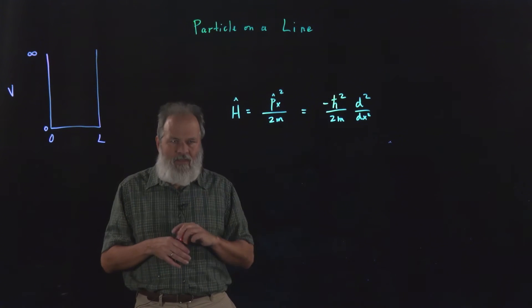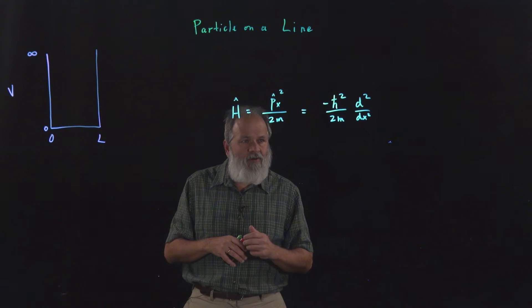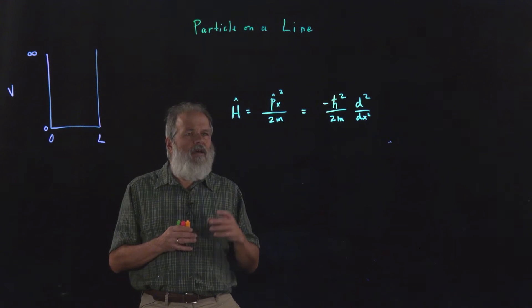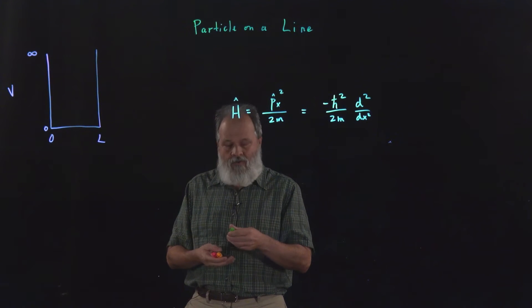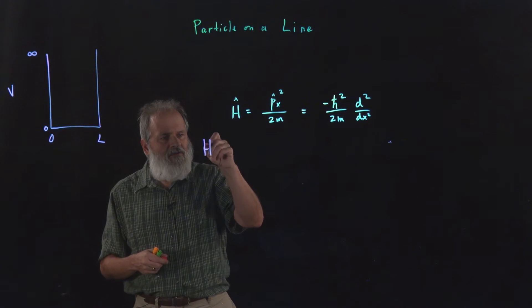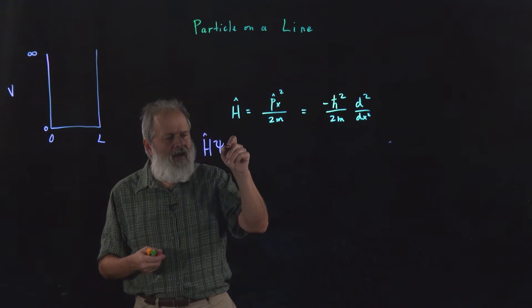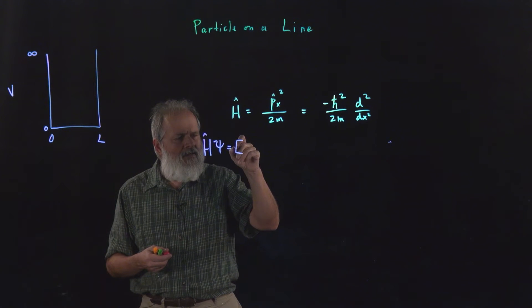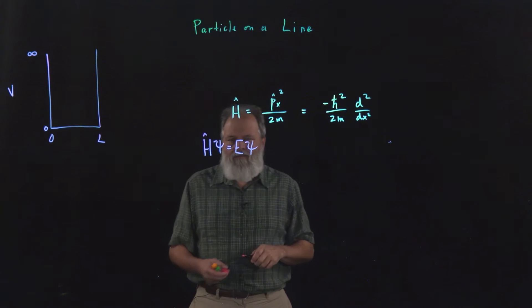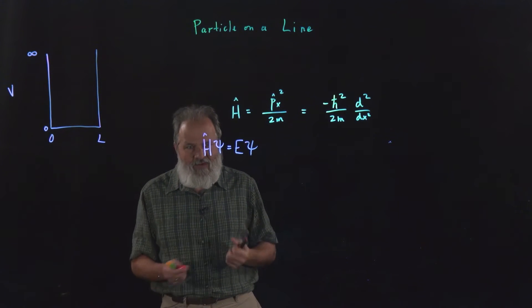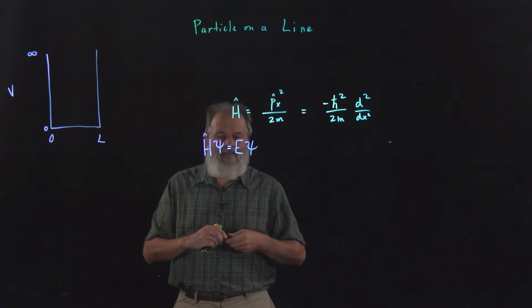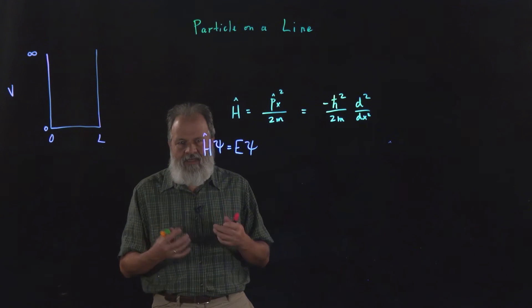Here's the Hamiltonian. It's minus h bar squared over 2m times the second derivative of x. The Schrödinger equation says we need to find the eigenfunctions of the Hamiltonian. And if we need to make any other function that's not an eigenfunction, we can simply combine the eigenfunctions. That's actually the most useful way to do any general function.